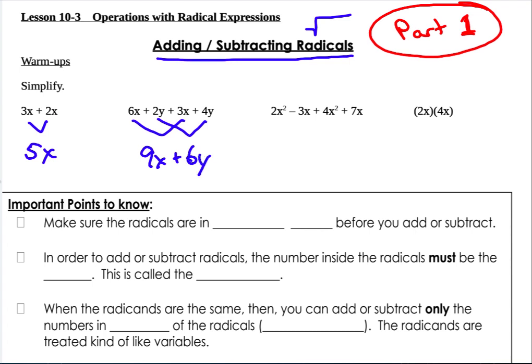You can only combine things that are like terms, meaning same variable and same exponent. So 2x² and 4x² is 6x² minus 3x plus 7x is plus 4x.